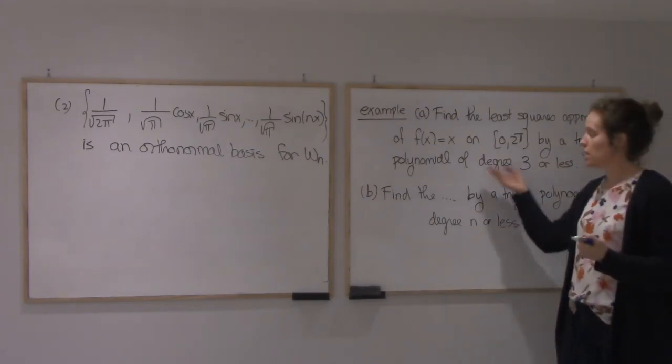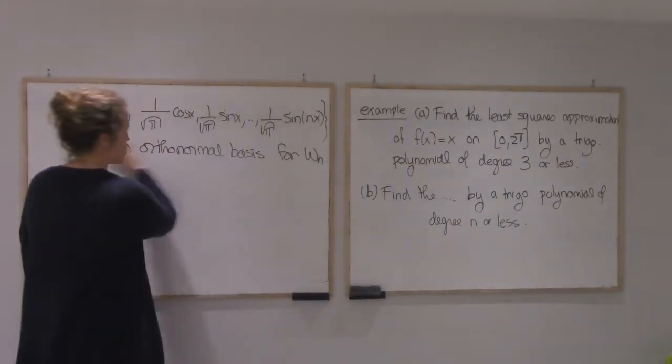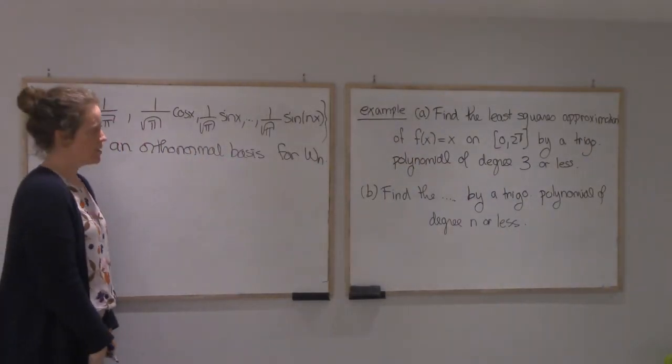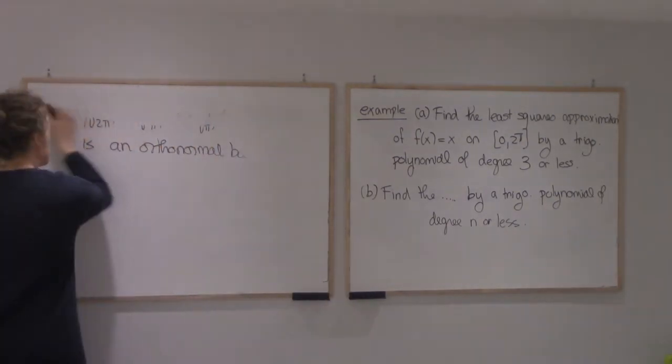And I want to see how I can approximate it by trigonometric polynomials. So we know we need to take projection onto this space, and we know we have an orthonormal basis for it. So it's just a matter of computing inner products and we'll get it. Let's try it.